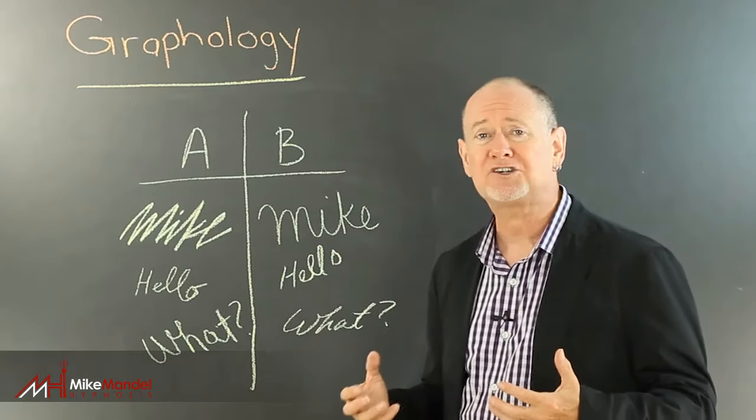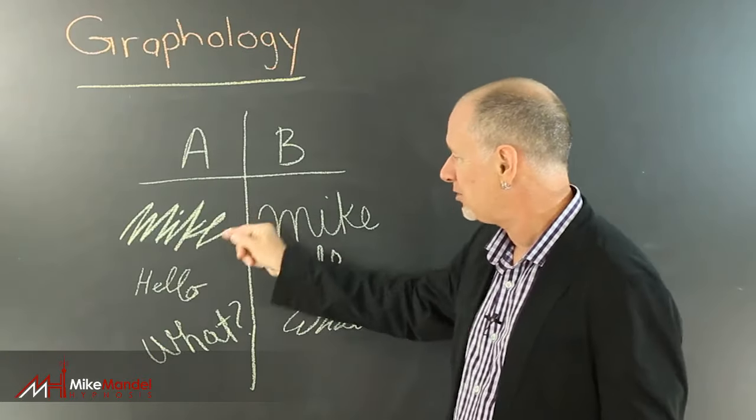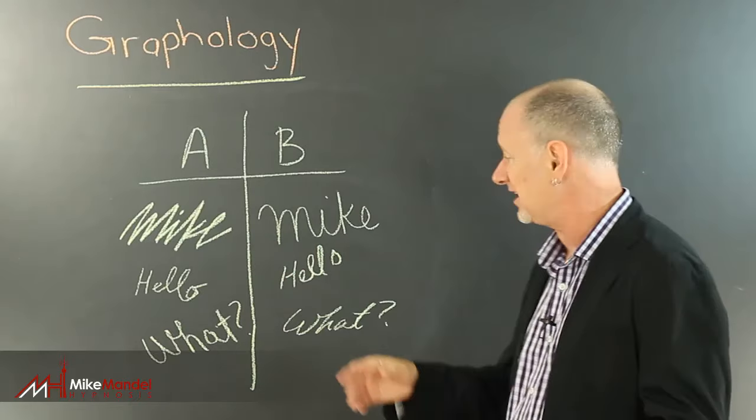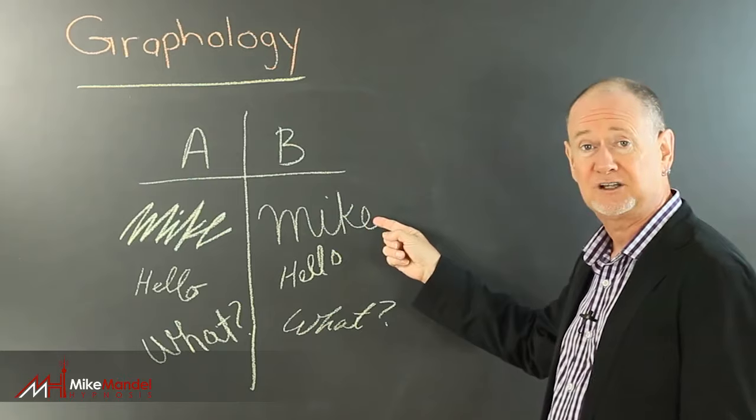Angles show aggression. Angles show energy. And with the amount of pressure put on the chalk here, this is an angry, aggressive, forward-moving person. And this person is much more relaxed and laid back.